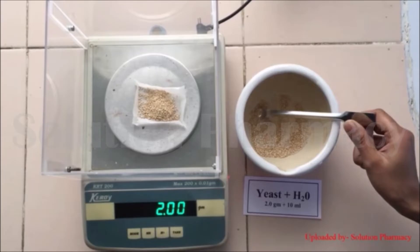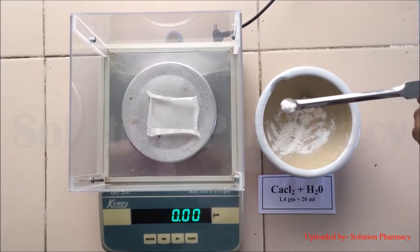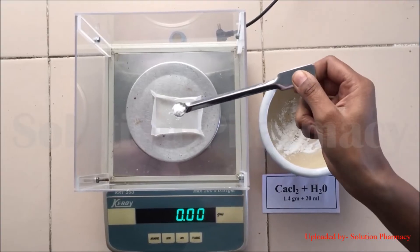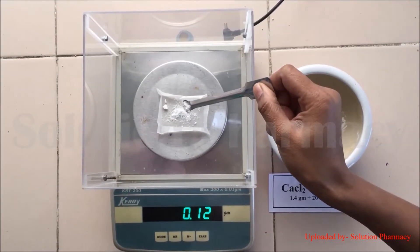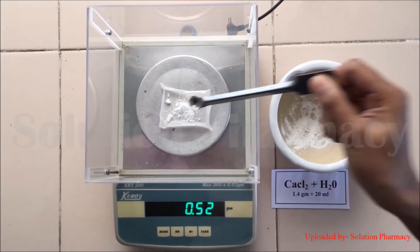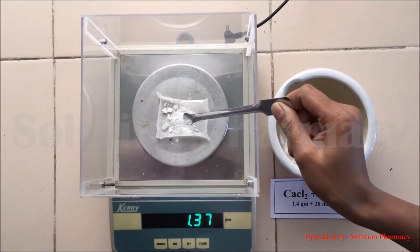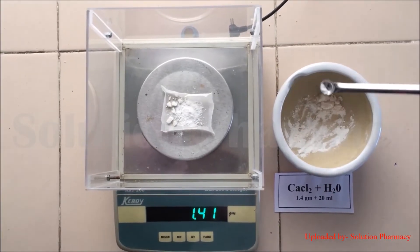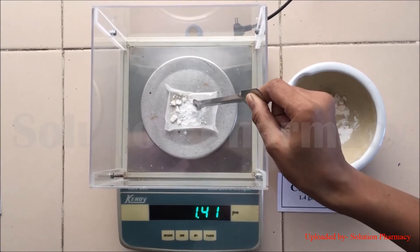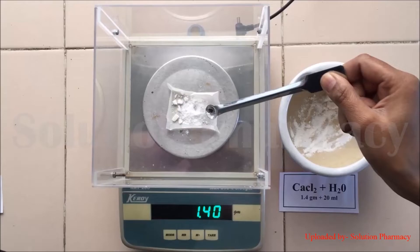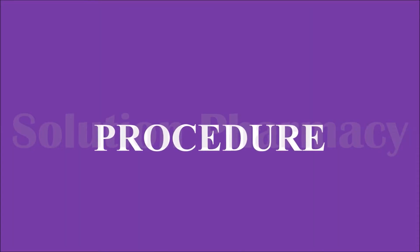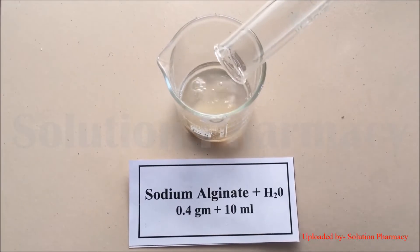Our yeast, which we purchased from the market, is in granule form, so we have crushed it in a mortar and pestle before weighing. After weighing the yeast, keep it aside. Then weigh calcium chloride — here we are weighing 1.4 grams of calcium chloride.